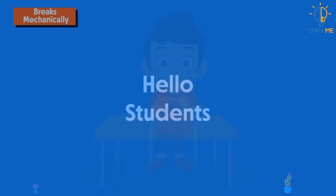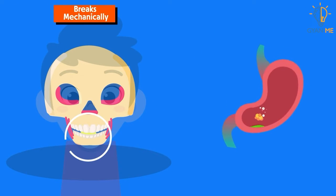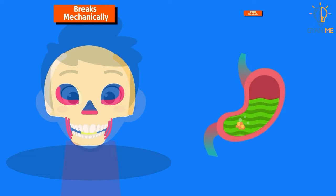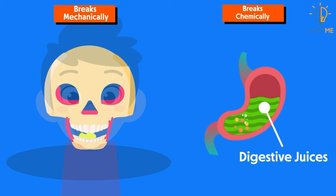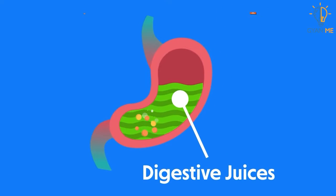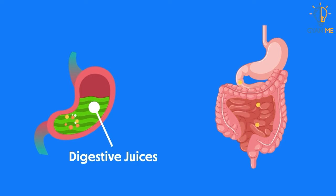Hello students! In our previous video, we learnt about physiology of digestion. In that, we learnt that throughout the digestive tract, various enzymes are secreted by different glands. These enzymes are also called as digestive juices and they break complex food into simpler substances — the process called digestion.